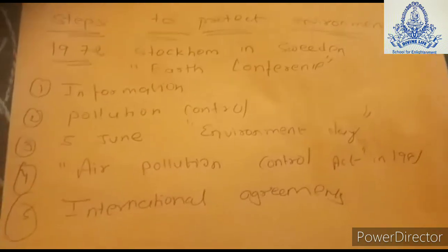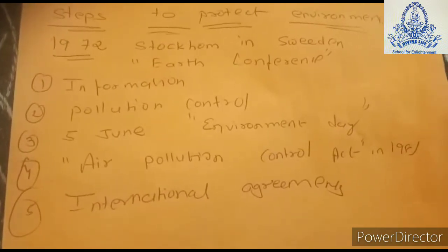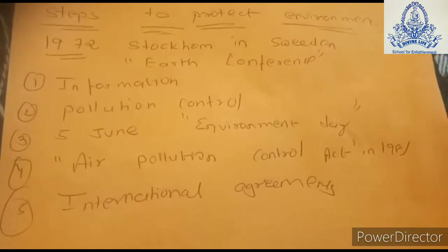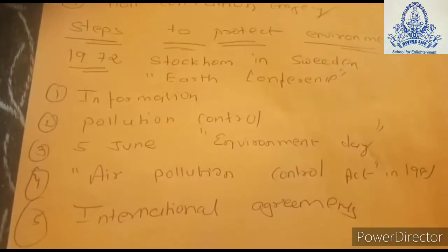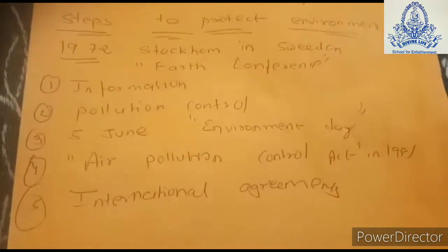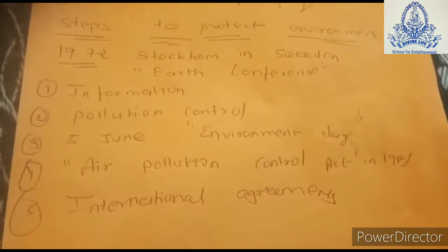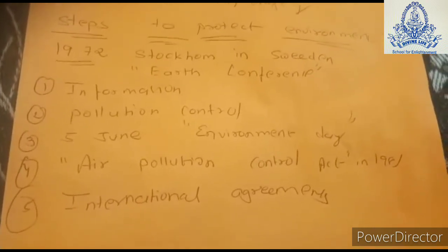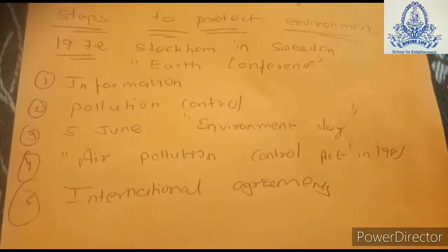Second, central and state pollution control boards have been established to control pollution. Fifth June has been declared as World Environment Day. Third, the Air Pollution Control Act 1981 was set up by the Indian government. International agreements have also been signed to control the level of ozone depletion, disposal of nuclear waste, and maintenance of biodiversity. In the end, conservation of the environment is everyone's responsibility — if we do not control pollution, no doubt life on Earth will be doomed soon.